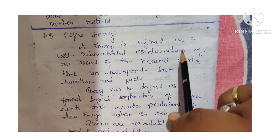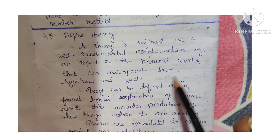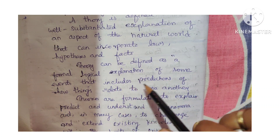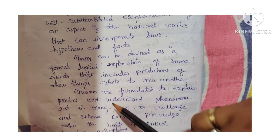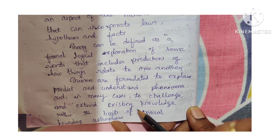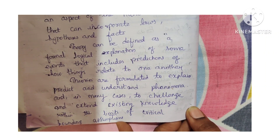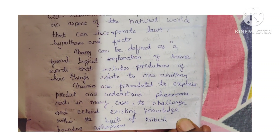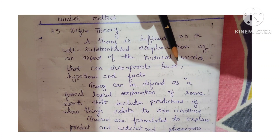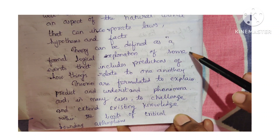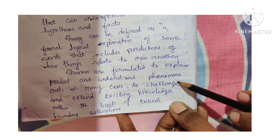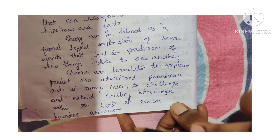A theory is defined as a well-substantiated explanation of an aspect of the natural world that can incorporate laws, hypotheses, and facts. Theory can also be defined as a formal logical explanation of some events that includes predictions of how things relate to one another. Theories are formulated to explain, predict, and understand phenomena and in many cases to challenge and extend existing knowledge within the limits of critical bounding assumptions.